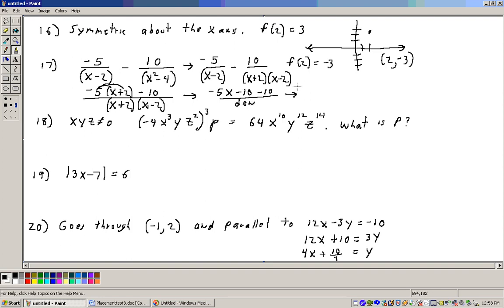That's taking the 5 through, minus 10 more over that same denominator that I have right there. I'll just write denominator. And then, combining like terms, I've got minus 5x minus 10 minus 10 is minus 20 over that denominator. And I'll go ahead and write it out.